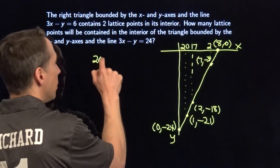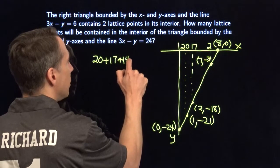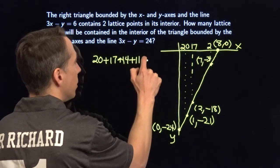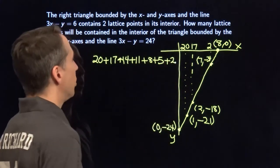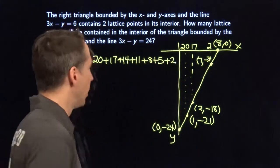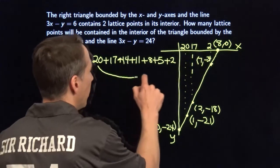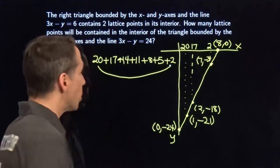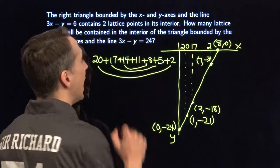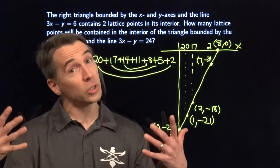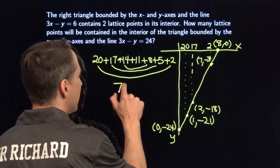We had 20, then 17, then 14, then 11, then 8, then 5, then 2. We just add all these up. Now we could start adding 20 plus 17 plus 14, but we can pair things up: 20 and 2 gives us 22; 17 and 5 gives us 22; 14 and 8 gives us 22. Three 22s is 66. Add on that last 11, and we have 77.